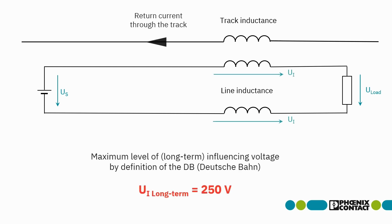The level of the influencing voltage depends, for example, on the traction current or the influenced cable length. Deutsche Bahn has defined it as 250 Volt. It is permanently present and is therefore called the long-term influencing voltage.